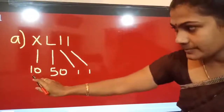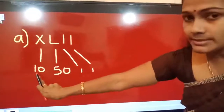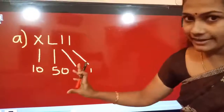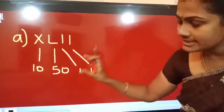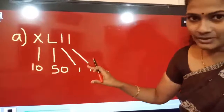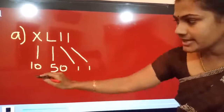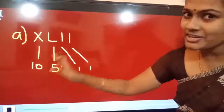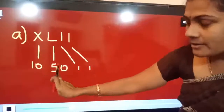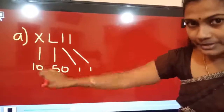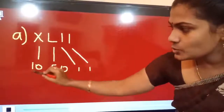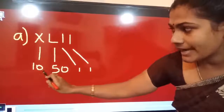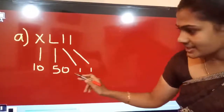You want to check which arrangement — ascending order or descending order. If it is descending order, we want to add. But here, see: 10, next is 50. So this is in ascending order. When a smaller number appears before a larger number, we want to subtract those two numbers. That is 50 minus 10. What is the answer? We get 40.